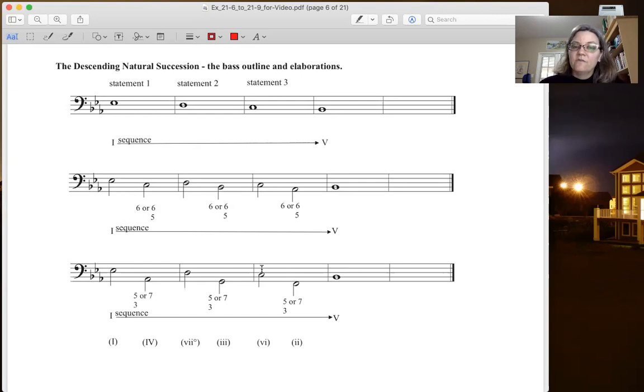So down a fifth, up a fourth, down a fifth, up a fourth, down a fifth, up a fourth. That's the root movement, regardless of whether you're doing it in root position or first inversion. So the root movement moves through the circle of fifths backwards.